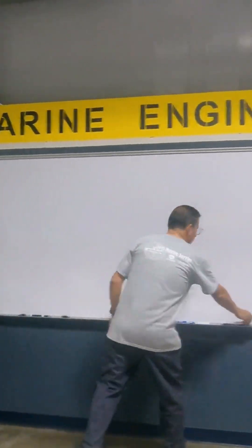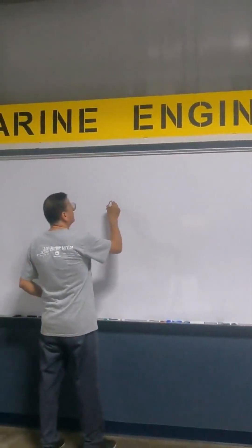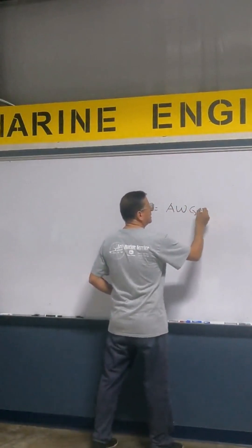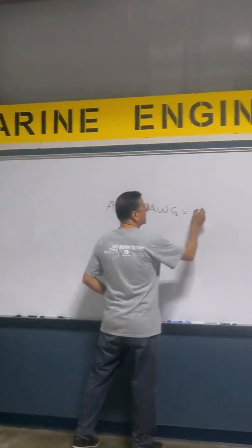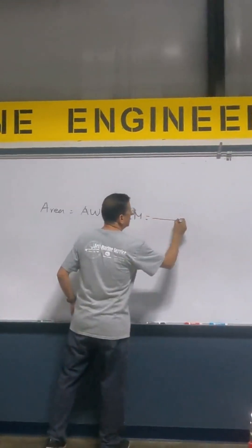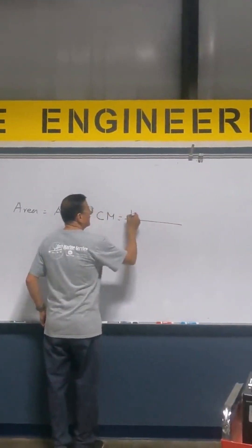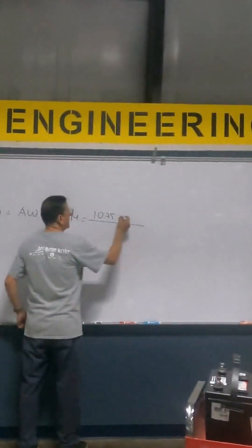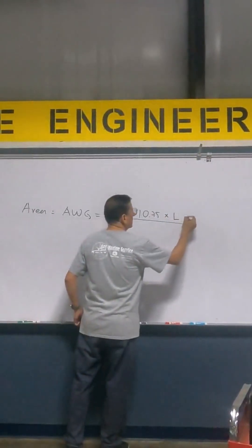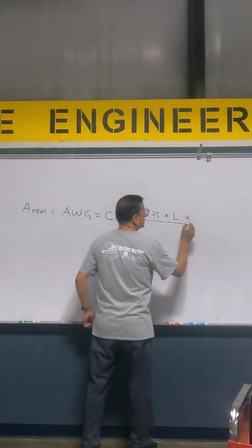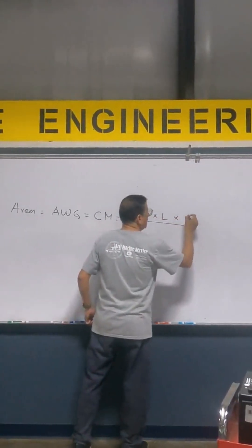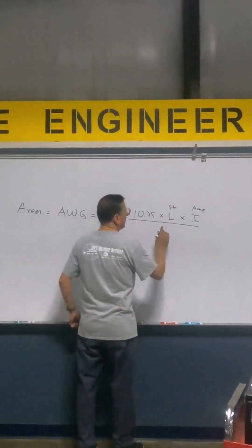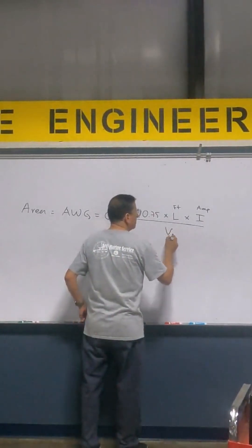What is the meaning of circular mils? The area A, WG, is in circular mils and is calculated as: 10.75 times the total length of the cable, times the intensity in amps, divided by the voltage drop.